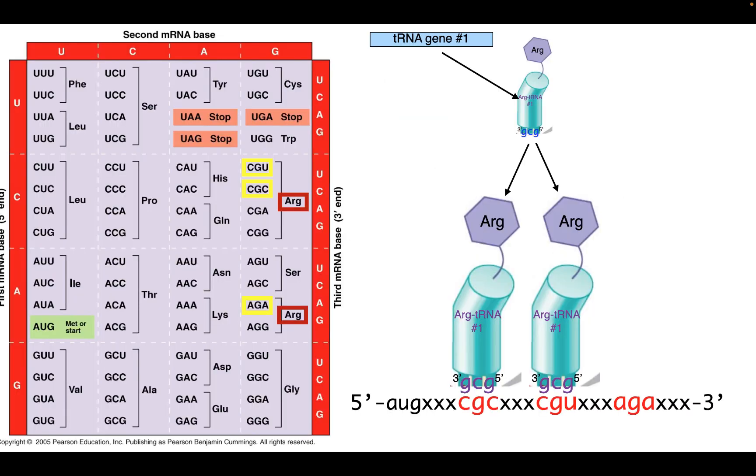So let's put this on our example here. Here we have our transfer RNA number one encoded by the gene number one. It's bound to arginine. And because of the wobble effect, not only does it bind to a CGC codon, but it also binds to a CGU codon. Furthermore, there is another gene, tRNA gene number two, which encodes tRNA number two, which is also a substrate of the same aminoacyl tRNA synthetase that tRNA number one is a substrate of. They are isoaccepting tRNAs, and therefore it also binds to arginine.